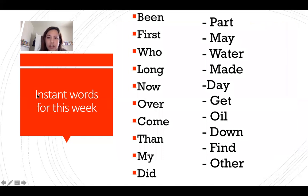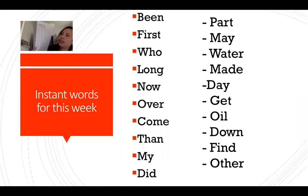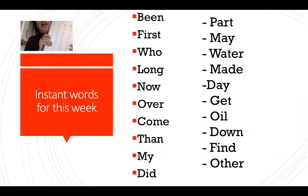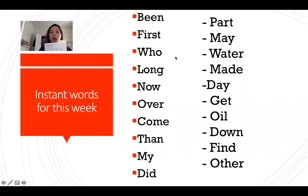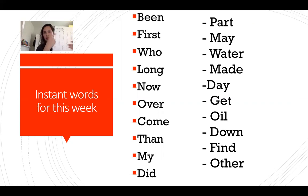Here are the instant words for this week. On ClassDojo I'll put a picture of this so you can practice reading it five times in different orders. The first 20 words are: been, first, who, long, now, over, come, than, my, did, part, may, water, made, day, get, oil, down, find, other.